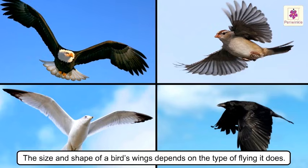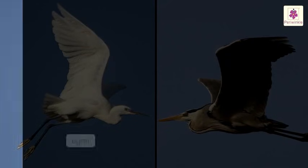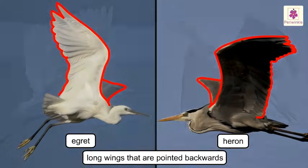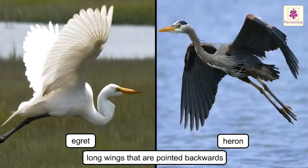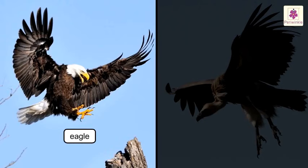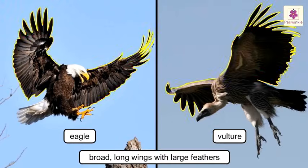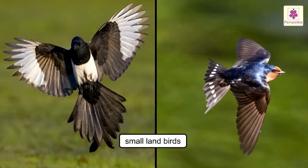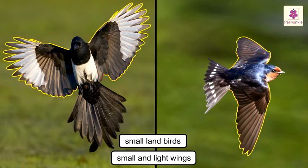Now let us study about their wings. The size and shape of a bird's wings depends on the type of flying it does. Waders like egrets and herons have long wings that are pointed backwards, which gives them speed and helps them to glide. Soaring birds like eagles and vultures have broad, long wings with large feathers, giving them control as they soar high above the ground. Most seabirds have long, thin, and narrow wings for gliding over the sea. Small land birds have to beat their wings almost all the time, so they have small and light wings.